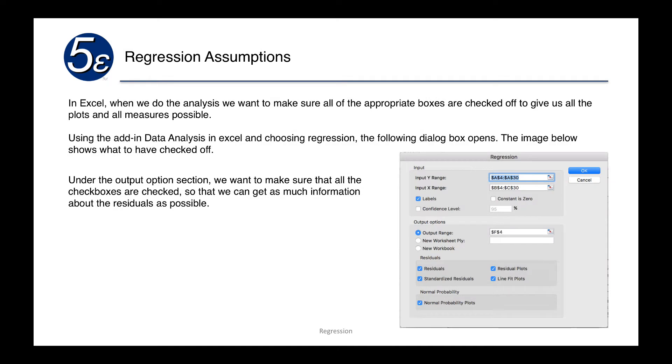In Excel we want to make sure all appropriate boxes are checked off to give us all the plots and measures possible. When we use the data analysis add-in in Excel, choosing regression, the following dialog box opens and this image shows what you want checked off. At the bottom it shows all of the residual plots and all of the normal probability plots.